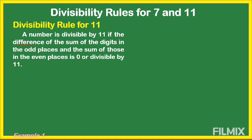Let's have an example: is 583 divisible by 11? We look at the digits: first, second, and third. The odd places are the first and third digits; the even place is the second digit. Add the odd-place digits: 5 plus 3 equals 8. The even-place digit is also 8. The difference: 8 minus 8 equals 0. Since the answer is 0, 583 is divisible by 11.